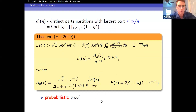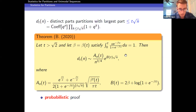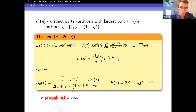The first result I want to discuss uses the same generating function but with distinct parts. So d_t(n) counts distinct parts partitions with largest part bounded by t√n. The asymptotic formula has an exponential of a constant times √n divided by a power of n, with a beta satisfying an integral equation. I also want to draw attention to this oscillation term — these curly brackets denote fractional parts, giving a bounded oscillatory term. This is based on a probabilistic model.